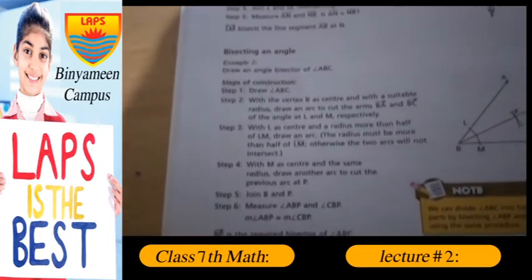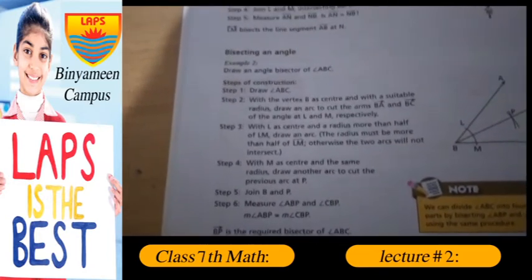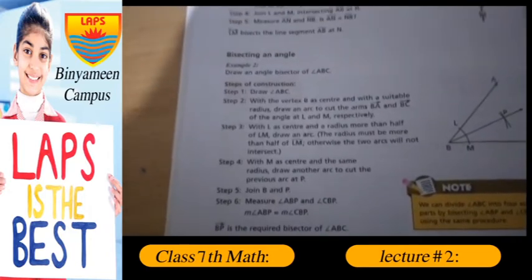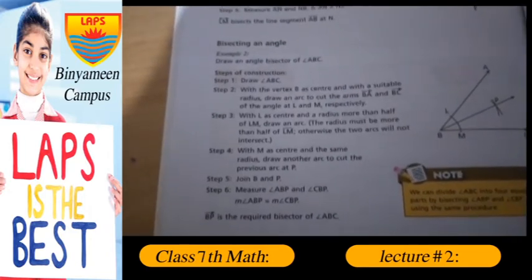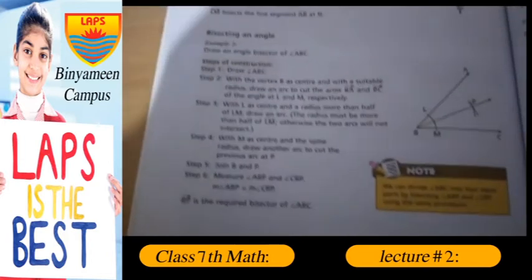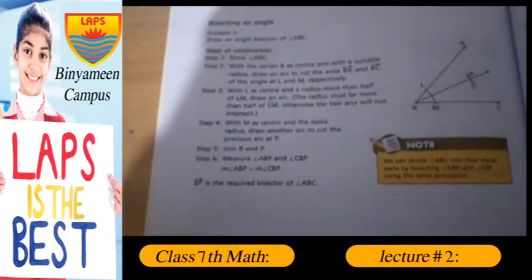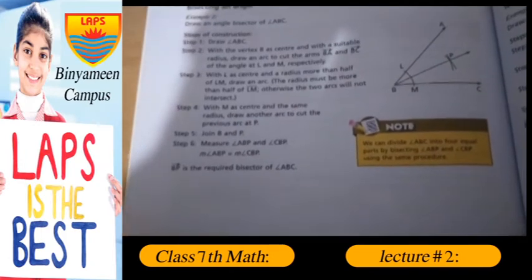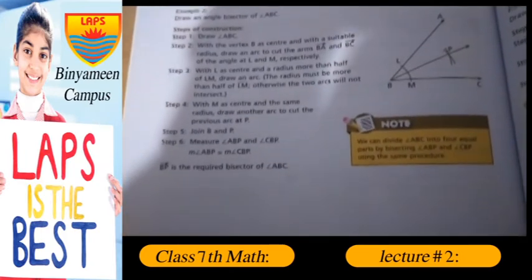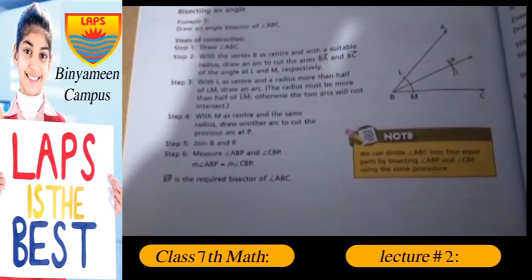Step 3: With L as center and a radius more than half of LM, draw an arc. The radius must be more than half of LM, otherwise the two arcs will not intersect.